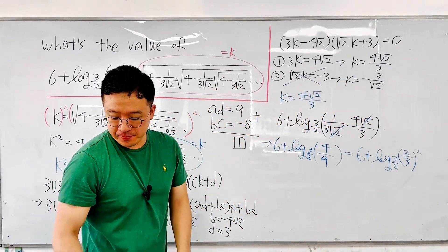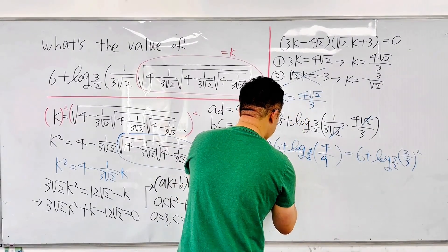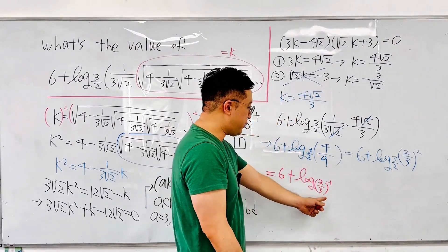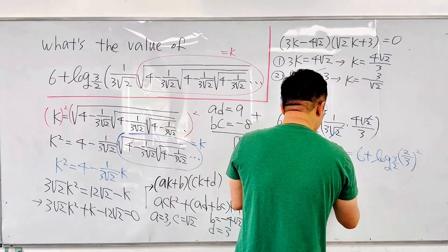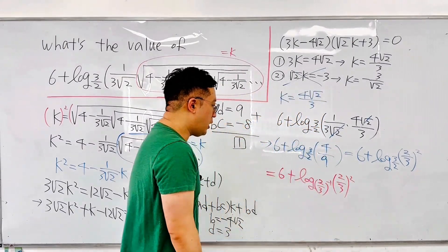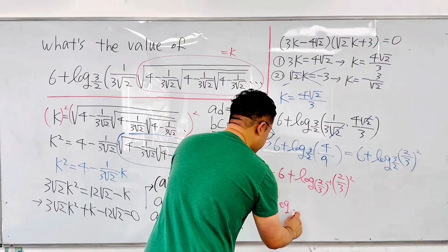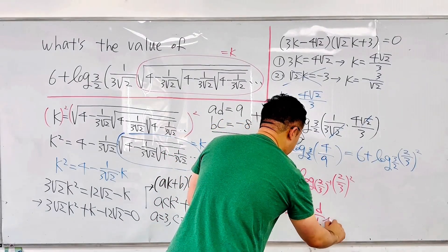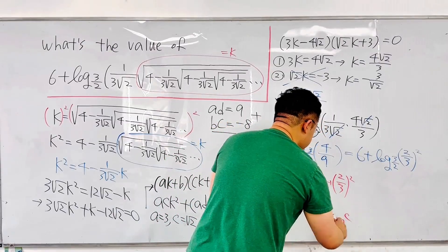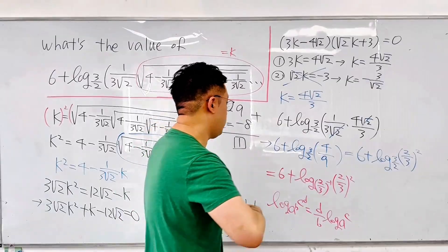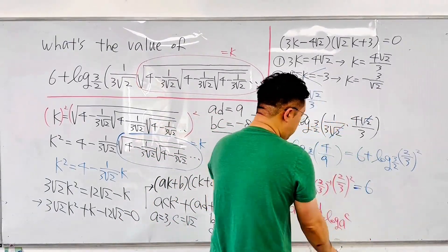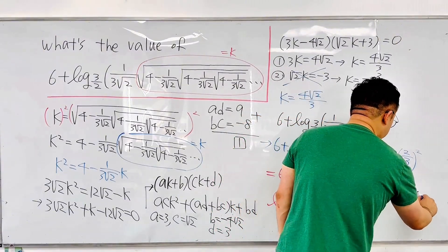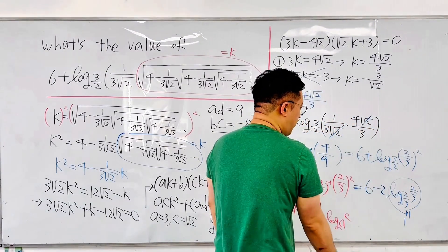Using the log property, we rewrite base 3/2 as (2/3)^(−1). So we have 6 + log base (2/3)^(−1) of (2/3)². Applying the property: log base (A^B) of (C^D) = (D/B)·log base A of C. This gives 6 + (2/−1)·log base(2/3) of (2/3) = 6 + (−2)·1 = 6 − 2 = 4.